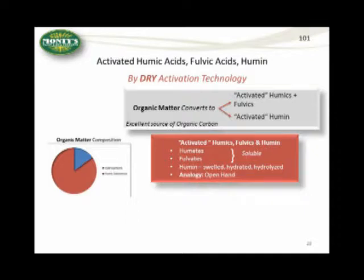You may ask, what is that humin material? Well, the humin material is a bulk organic mineral substance — it's really the black particles that you see in different soil types. It's naturally balanced and needed for overall good soil structure. We have the ability to activate that, to swell it, to hydrate it, and to make it active.